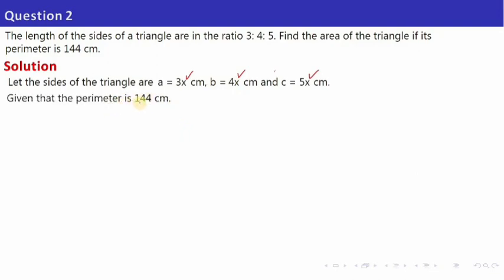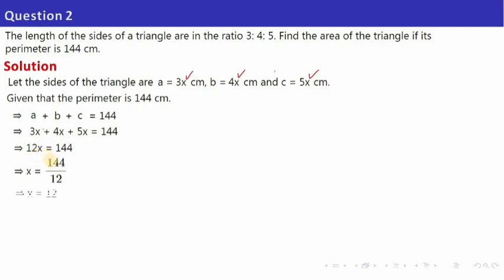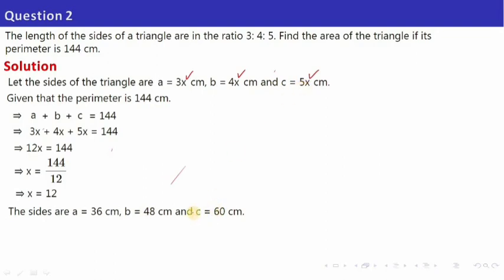The perimeter is 144, which means A plus B plus C equals 144. Substituting, 3x plus 4x plus 5x equals 12x equals 144. So x equals 12. Putting the value of x: A equals 3 into 12 is 36, B equals 4 into 12 is 48, and C equals 5 into 12 is 60. We have now got all three sides.